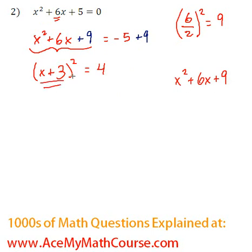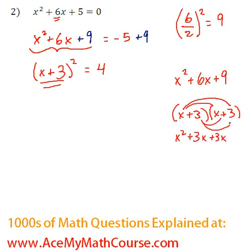Because if we were to expand x plus 3 times x plus 3, we would need to FOIL. So we would get x squared plus 3x plus 3x plus 9. And these guys would become the 6x. So that is just another way of writing x squared plus 6x plus 9, which is x plus 3 squared.